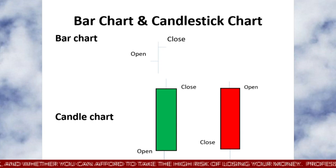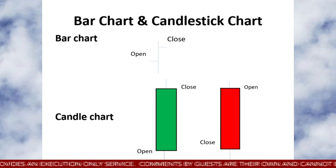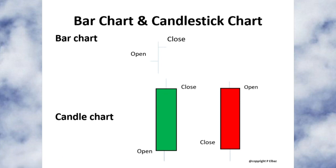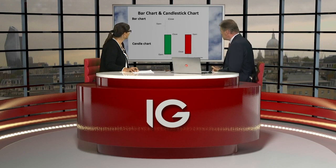Let's go back to basics. To have a candlestick chart, you essentially need four prices: the open, high, low, and close. The bar chart gives us exactly that. If you look at the bar chart at the top and the candle underneath it, you can see quite clearly it's more visual. What we have is the body of the candle — the body represents the difference between the open and close, and that's why it's called a candlestick. It looks like a candlestick. And then you see the upper and lower shadows, also called wicks, which show you the high and the low.